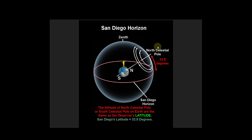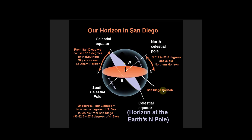This is an observer in San Diego. This is the location of the north celestial pole, which is 32 and a half degrees above the observer. The observer can also see some of the southern sky. There is the north celestial pole — this orange line is the horizon in San Diego, and this is Santa's horizon. From our location in San Diego, we can see the north celestial pole 32 and a half degrees above our horizon. We can also see 57 and a half degrees of the southern sky. The remaining portion of the southern sky will be forever invisible — below our horizon.